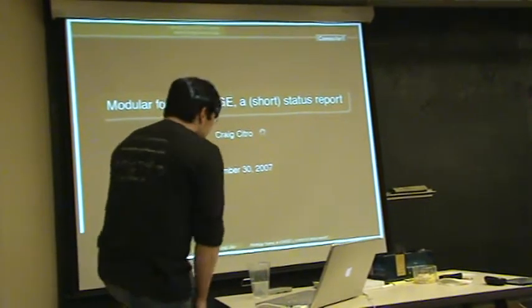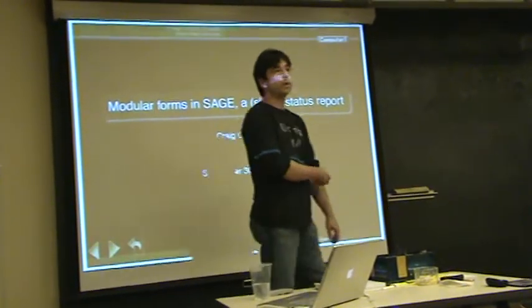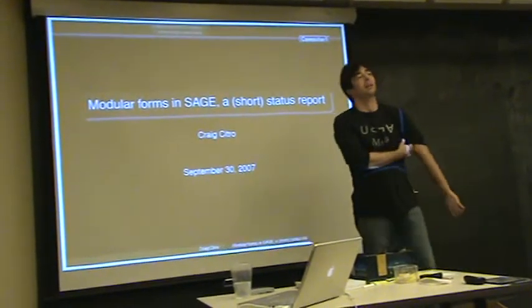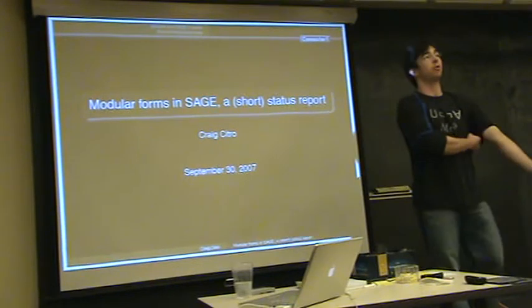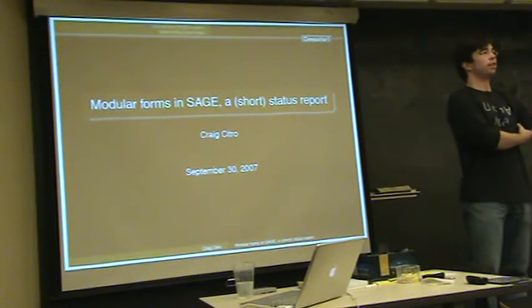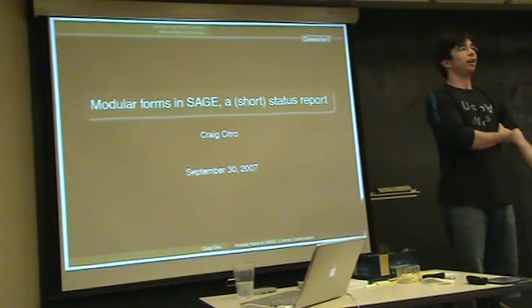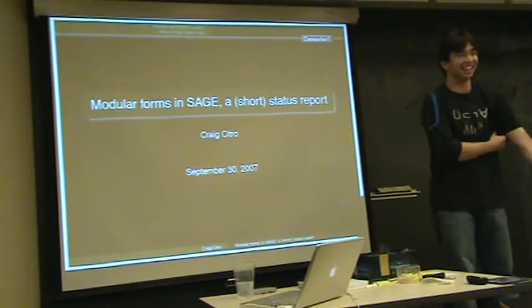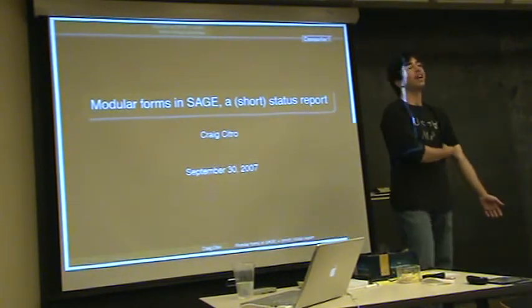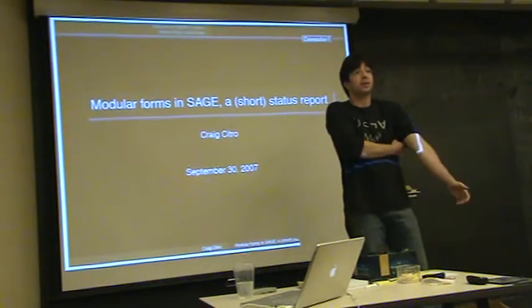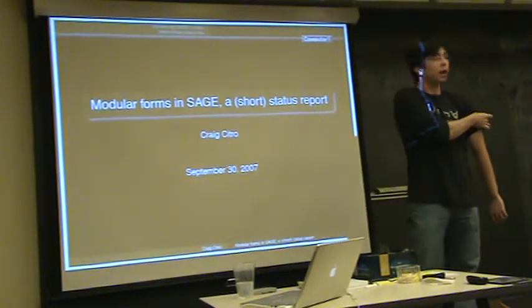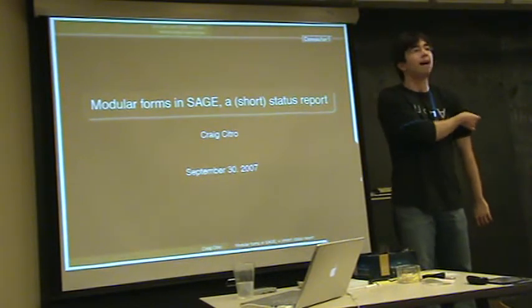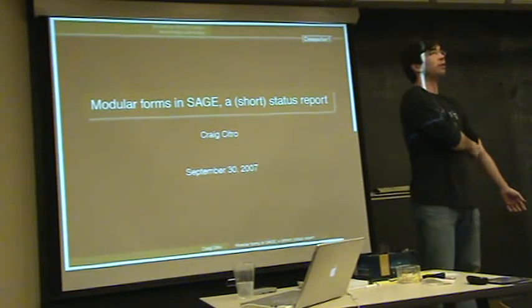Awesome. All right. Let me ask two or three questions before I start. Raise your hand if you've ever used the modular forms code or modular symbols code in Sage for anything. Keep your hand up if it did what you wanted for something reasonably complicated. And the next question is, how many of you have something you would really like the modular forms code to do?